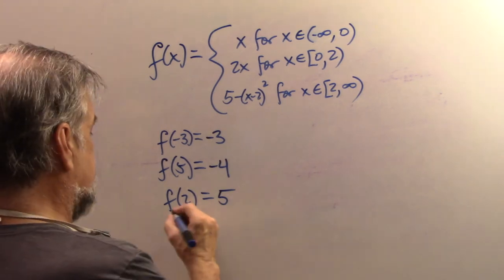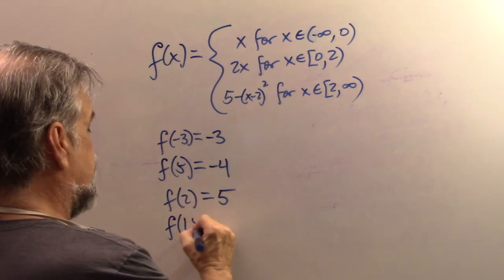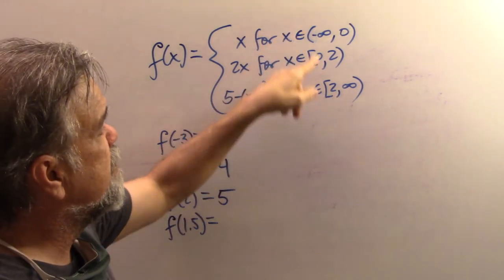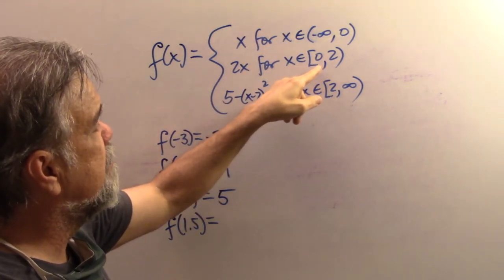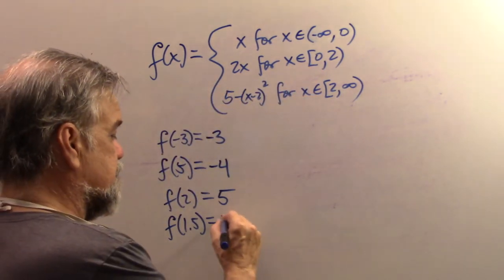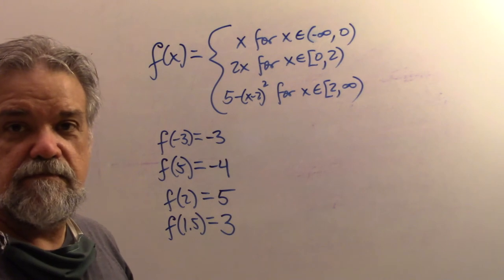And then finally, let's look at F of 1.5. Well, 1.5 is between zero and two. So it falls into this interval. So it's going to be two times 1.5. That'll give us three. That's not so hard.